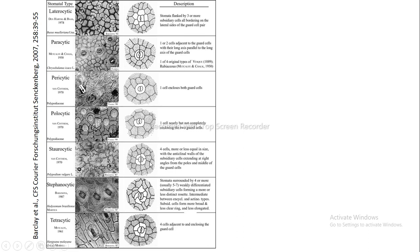Stephanocytic arrangement is where the stomata are surrounded by usually four to five to seven weakly differentiated subsidiary cells forming a more or less distinct rosette arrangement — intermediate between encyclocytic and actinocytic types. The subsidiary cells form a broader, less clear ring that is less elongated, which is why these are called stephanocytic.